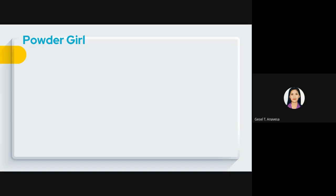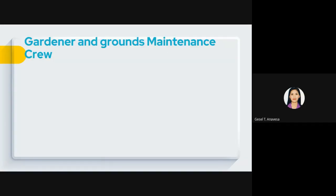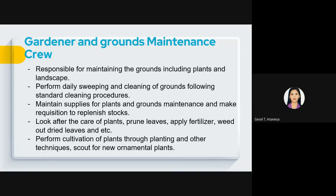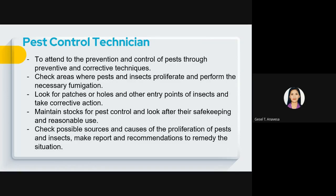The powder girl is responsible for the cleaning, care, and maintenance of ladies' comfort rooms and locker rooms. She regularly checks the trash and empties garbage bins from time to time. Since public areas are frequently used by guests, it is her responsibility to maintain cleanliness in the comfort room. The gardener and grounds maintenance crew are responsible for maintaining the grounds, including plants and landscapes — the beautification of the hotel. The pest control technician is responsible for the prevention and control of pests.